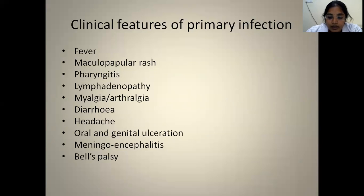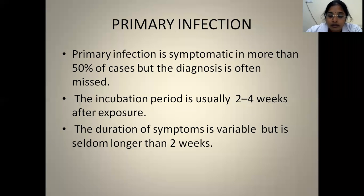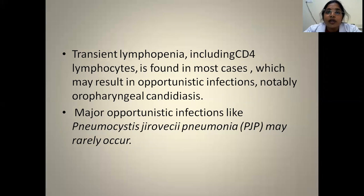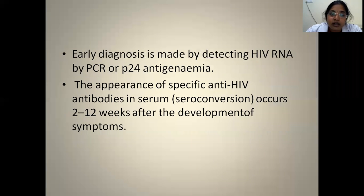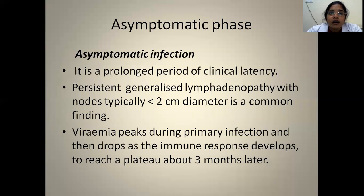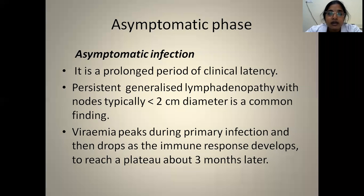Other symptoms include pharyngitis, lymphadenopathy, and mucosal ulcerations. Duration can be up to two weeks but diagnosis is missed as symptoms are very non-specific. During primary infection there can be transient lymphopenia and decrease in CD4 counts, so patients can present with mild opportunistic infections like oropharyngeal candidiasis. Early diagnosis can be made by detecting HIV RNA by PCR. Seroconversion takes around 2 to 12 weeks after development of symptoms, after which viremia drops and immune response develops, reaching a plateau about three months later.